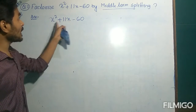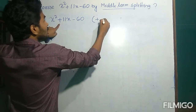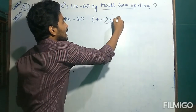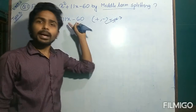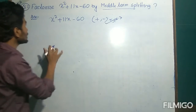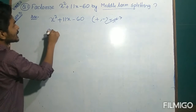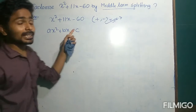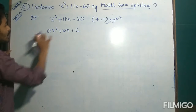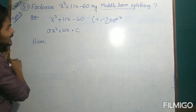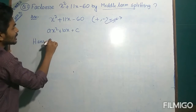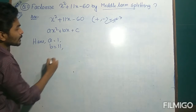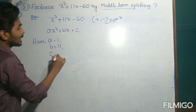Look at this quadratic polynomial. Here we have two signs, one is positive and the second one is negative. So this is a Type 3 type of quadratic polynomial and we are going to factorize it. We have to first compare this quadratic polynomial with the general quadratic polynomial. After comparison we get A is 1, B is 11, and C is minus 60.